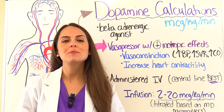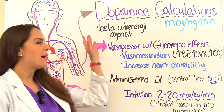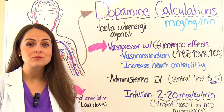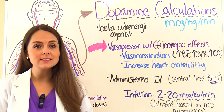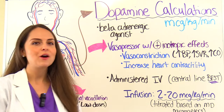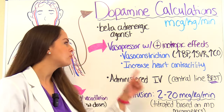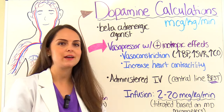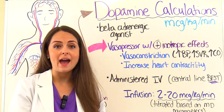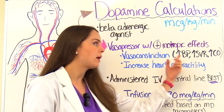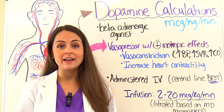First, let's do a quick pharmacology review over dopamine. This drug is a beta-adrenergic agonist, which means it acts as a vasopressor with positive inotropic effects. Vasopressors perform vasoconstriction — they narrow the vessel, and whenever that happens it will help increase blood pressure, increase systemic vascular resistance, and increase cardiac output.